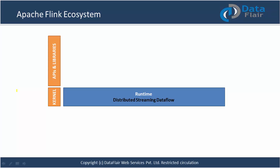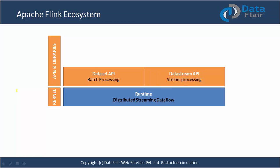On top of the core, we have different APIs and libraries: DataSet APIs for batch processing and DataStream APIs for stream processing. On top of DataSet APIs, we have Flink ML for machine learning — used by data scientists for advanced analytics like predicting the future. Gelly is used for graph processing, such as finding friends of friends on Facebook or first and second degree connections in LinkedIn.